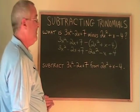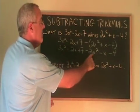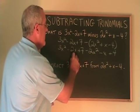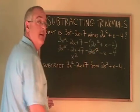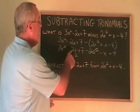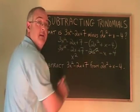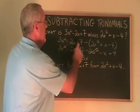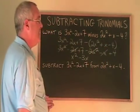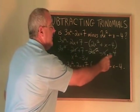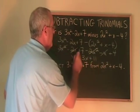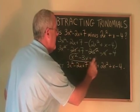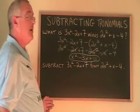Now, we've just combined similar terms. 3x squared minus 2x squared is x squared. The x squared terms are gone. Negative 2x minus x is minus 3x. The x terms are gone. And 7 plus 4 is 11. This is our answer.